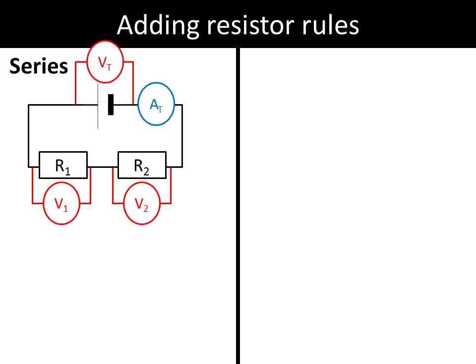So a simple series circuit looks like this, has two resistors in series with each other. What do we know about this circuit? Well for any circuit we can always analyze voltage, current and resistance.